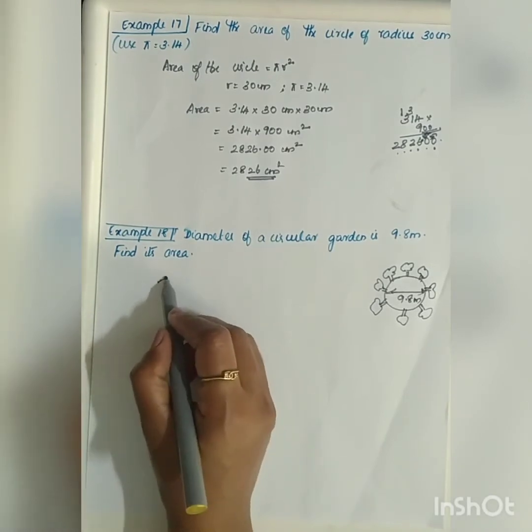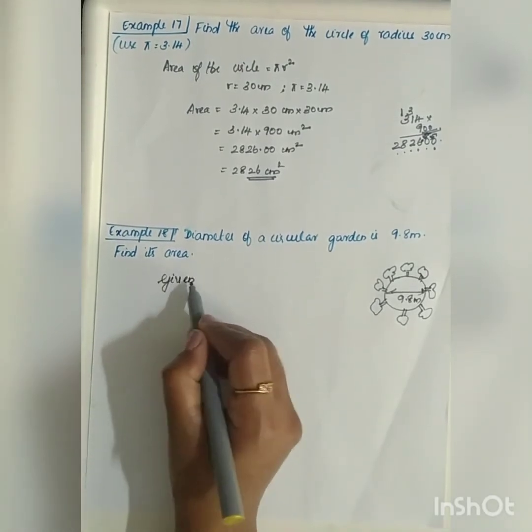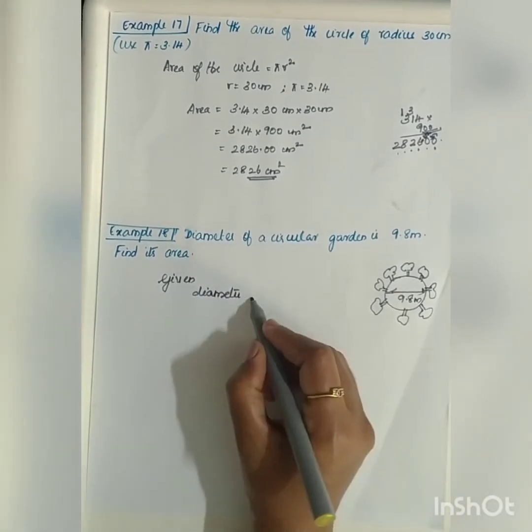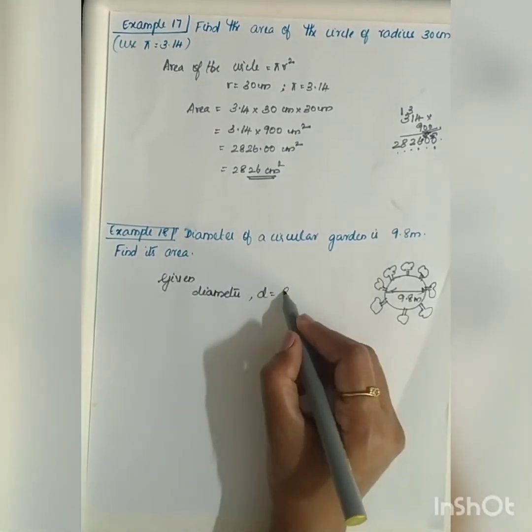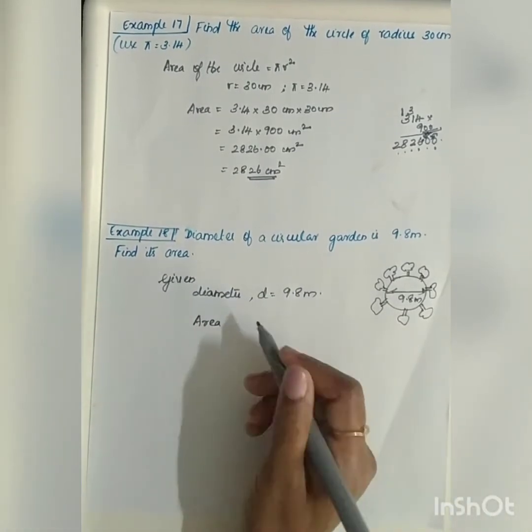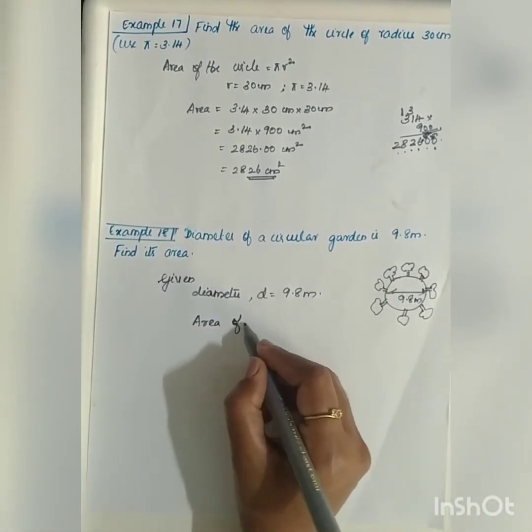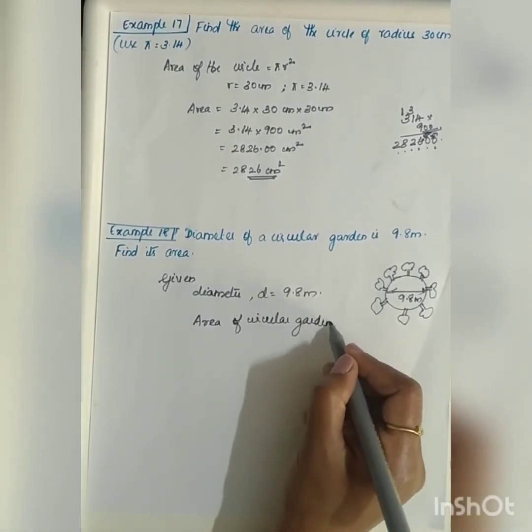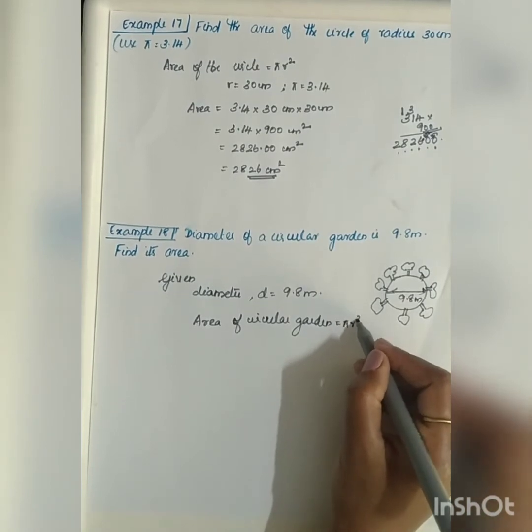It is also a direct question. What is given? Given diameter of the circular garden. Let me take it as d is equal to 9.8 meter. Therefore, area is equal to, you know, that area of the circular garden, since it is circular, area of the circular garden is equal to pi r square.